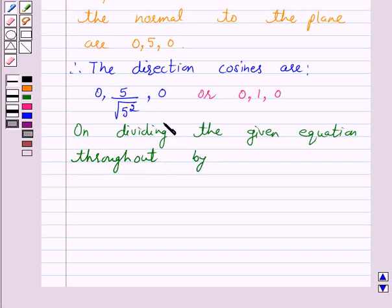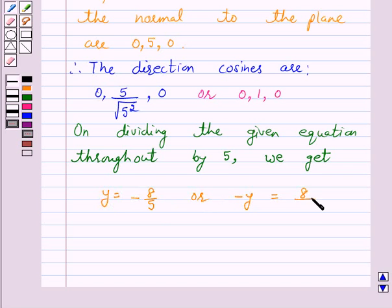By root 5 square which is 5, we get y is equal to minus 8 over 5, or minus y is equal to 8 over 5.